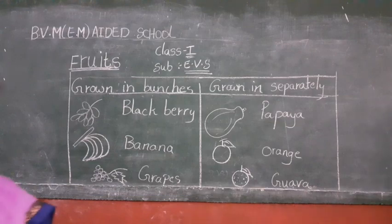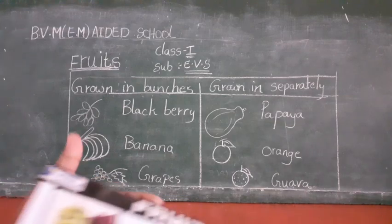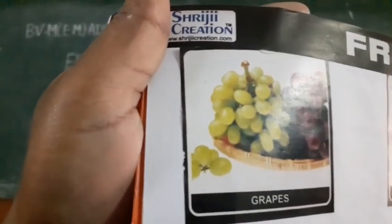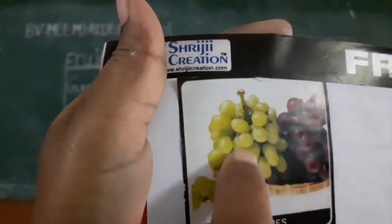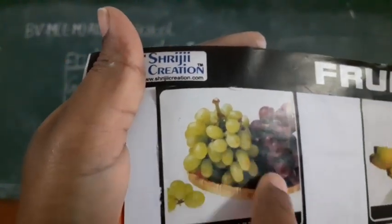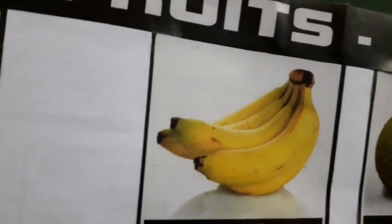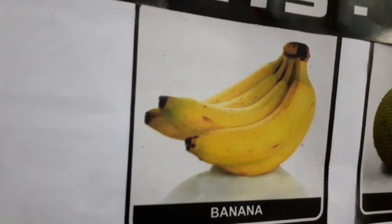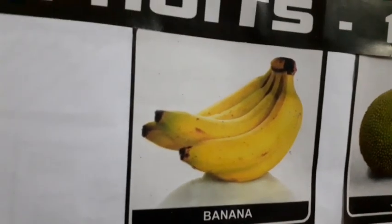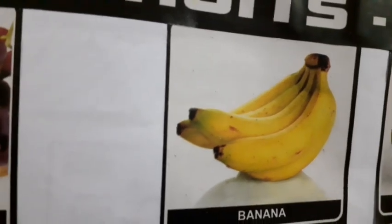I will show the picture. See here children - it's grapes. Grapes are grown in bunches. So many fruits like this are called bunches. Next, what is it children? It's a banana. How many bananas are there? In this picture, five bananas are there. Banana also grows in bunches.